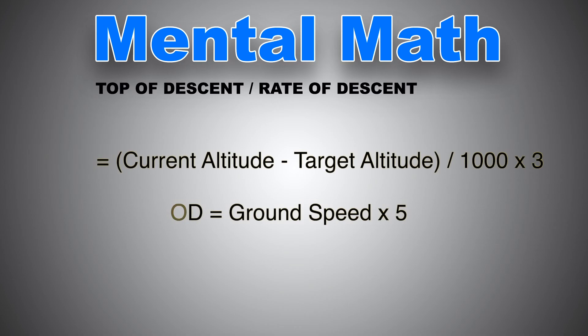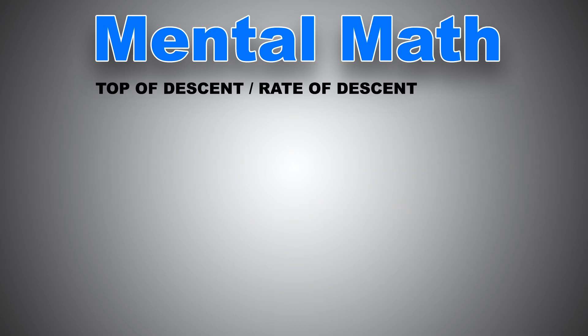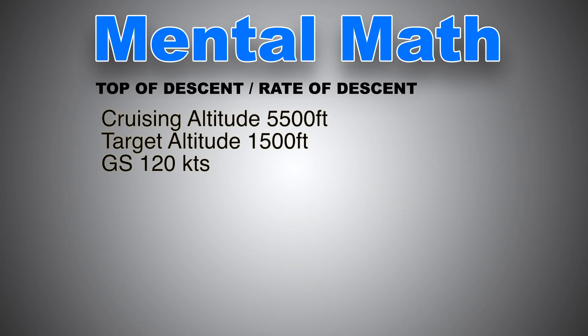For better understanding, let's do an example together. Let's say we're cruising at an altitude of 5500 feet and our target altitude is 1500, pattern altitude for a VFR cross country. And our ground speed for today is 120 knots. So again, the difference between the two altitudes, 5500 minus 1500 gives us 4000 feet. And then we divide it by 1000, 4, and we multiply it by 3. 4 times 3 is 12. So 12 nautical miles.